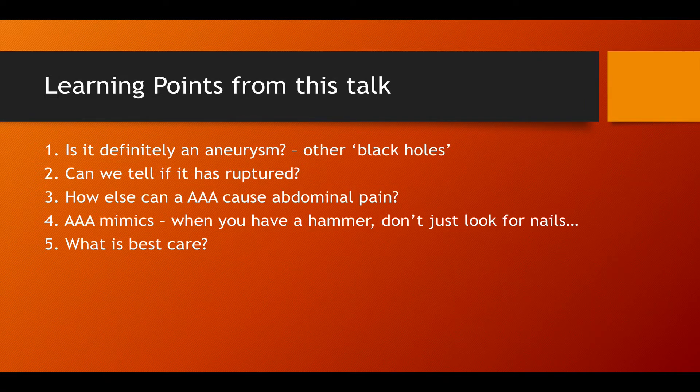The sorts of questions I'm going to put to you are: what else causes a big black hole in the tummy? How can we tell if an aneurysm is ruptured? What else can cause abdominal pain beside the AAA? What can mimic a AAA? Because once you have a hammer everything starts to look like a nail. And finally, you have to start thinking ethically — what is the best care for my patient?